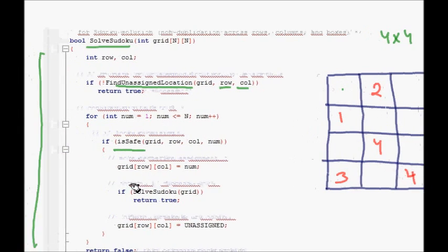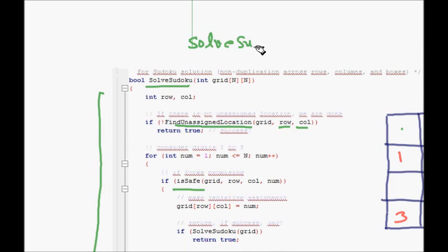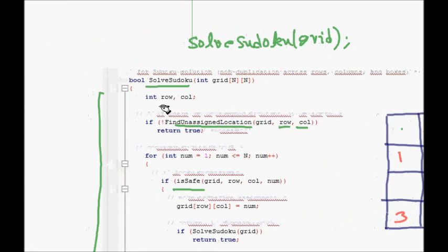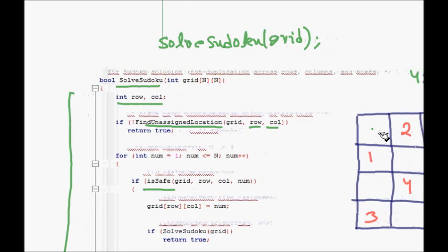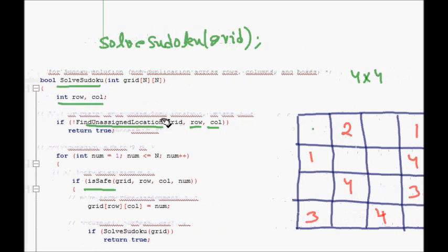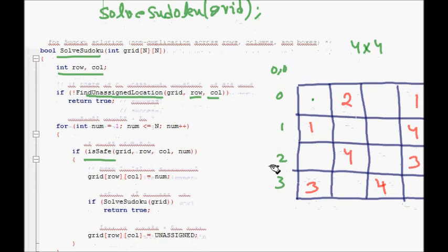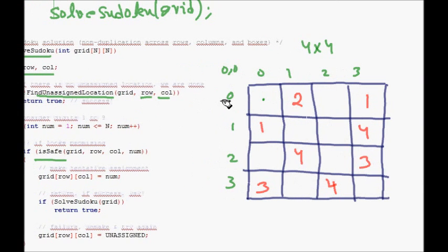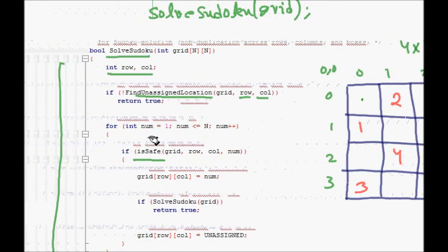We call 'solveSudoku' with our grid, which is a two-dimensional array. Inside the function, we call 'findUnassignedLocation' passing the grid and row/column variables. The first unassigned cell is (0, 0) — rows and columns are indexed zero to three — so (0, 0) is our first unassigned cell.